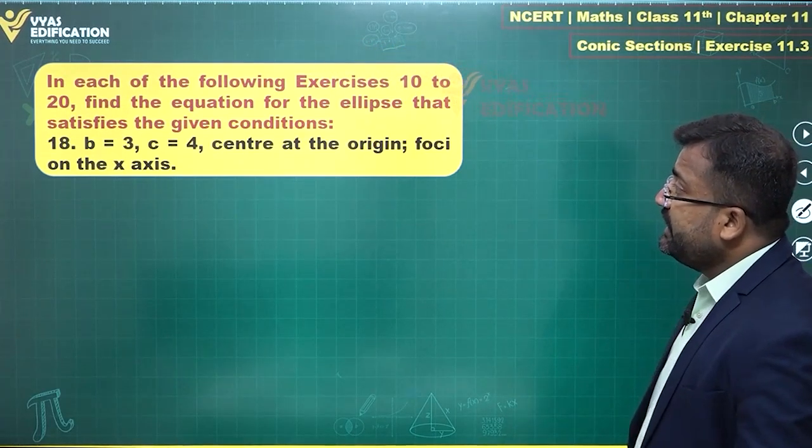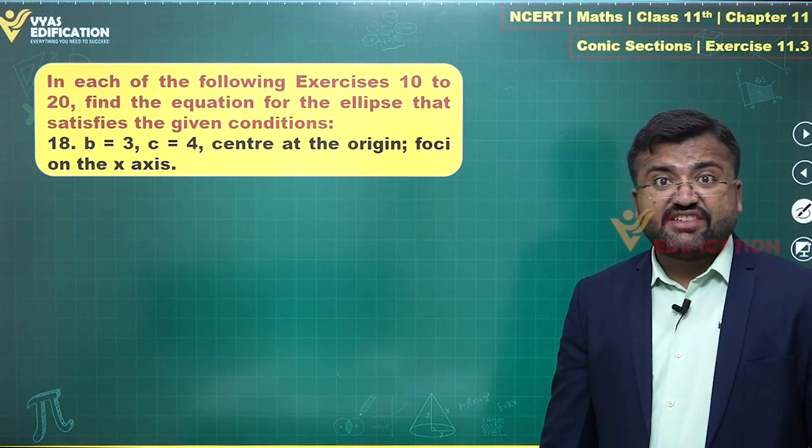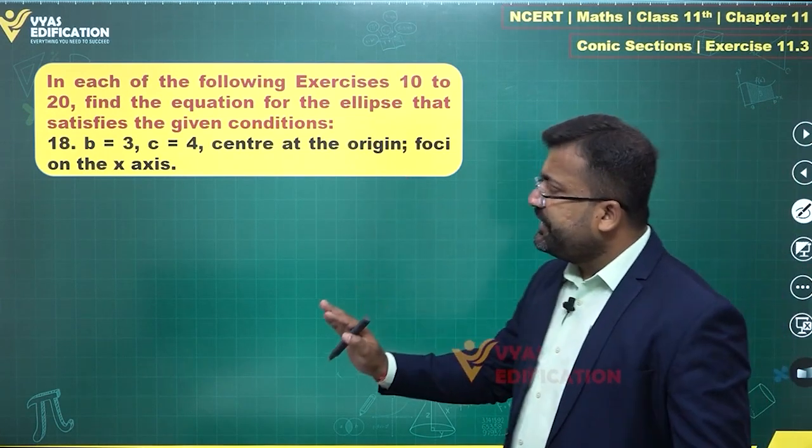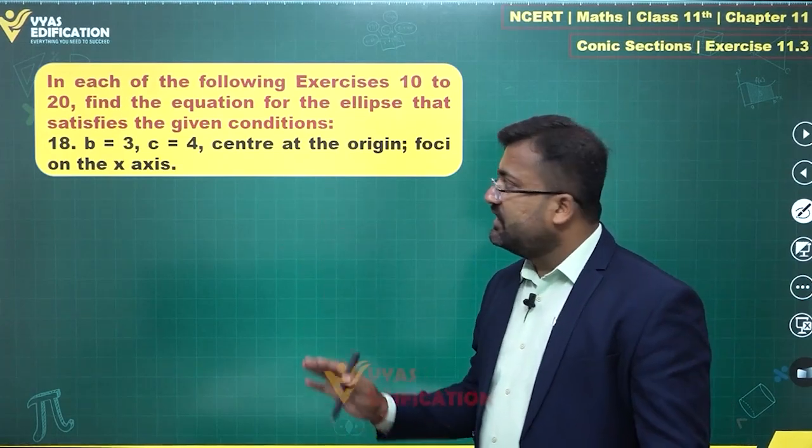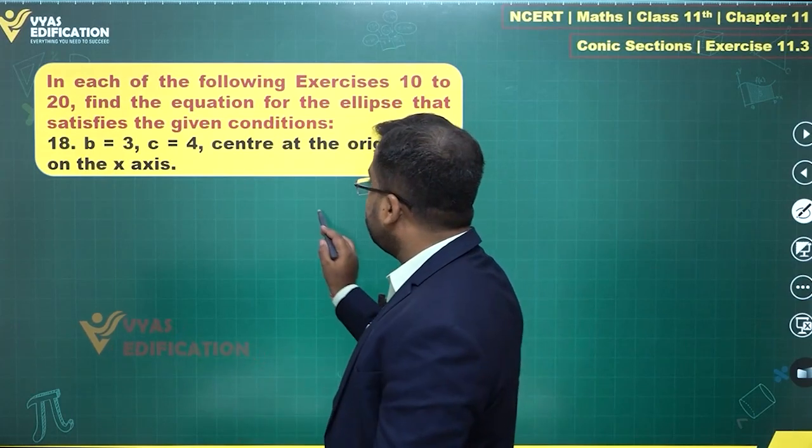18th question says b is equal to 3, c is equal to 4, and center at the origin, foci on the x-axis. That's what we are given. So in the standard equation, these are all standard terminologies. b and c are standard terminologies. Center at the origin, foci on the x-axis.